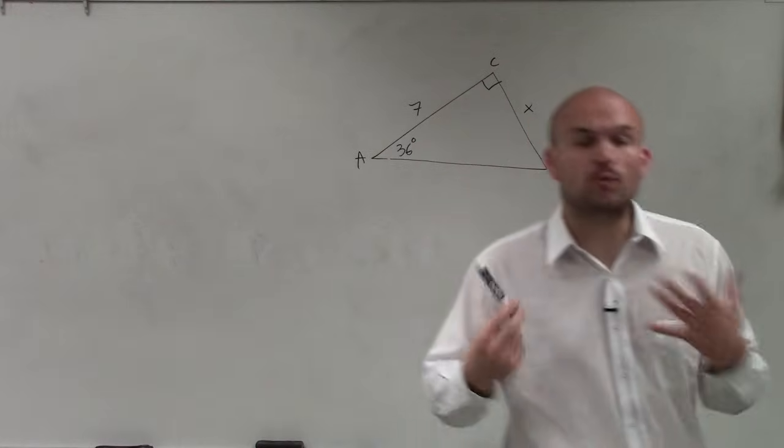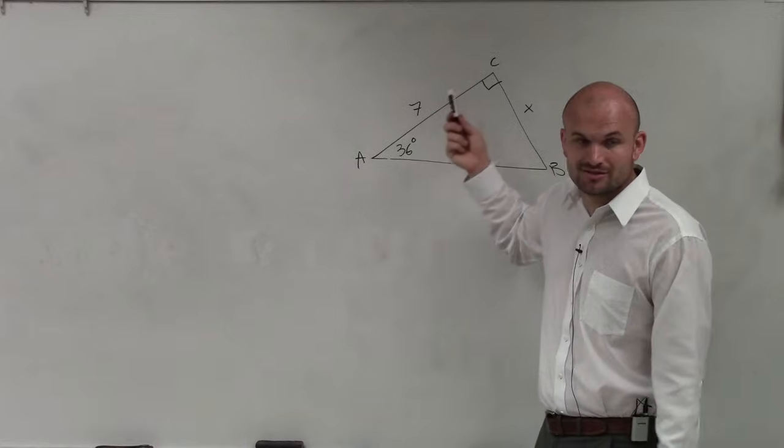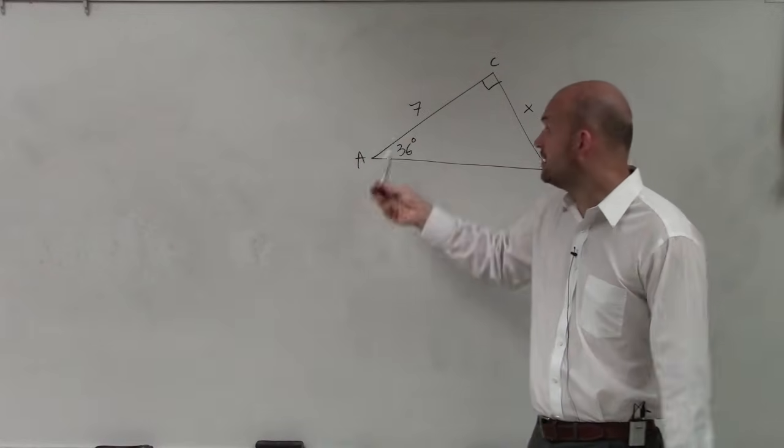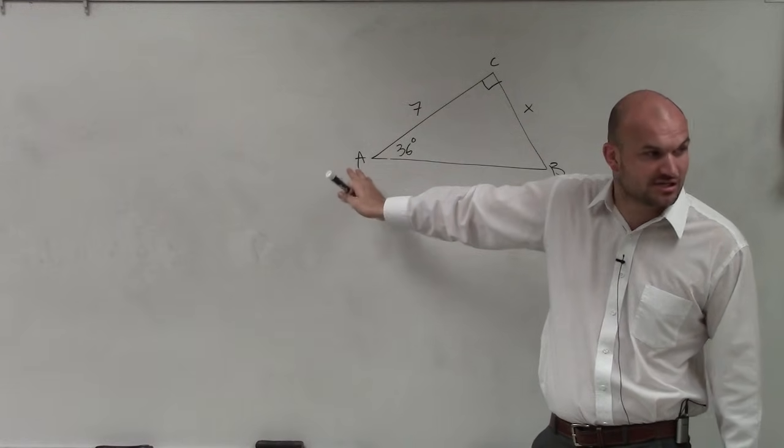So first of all, we need to look at which angle are we provided? A, C, or B? Well, obviously C is the right angle, so we're not going to be evaluating that. But it's either A or B. And between these two, you can see that A is going to be our selected angle.